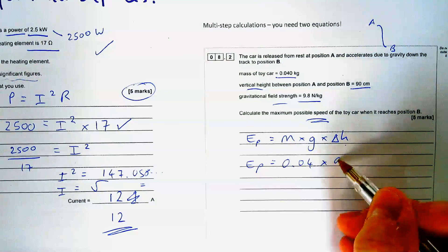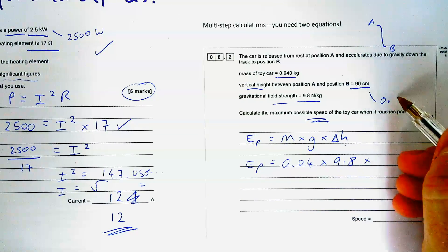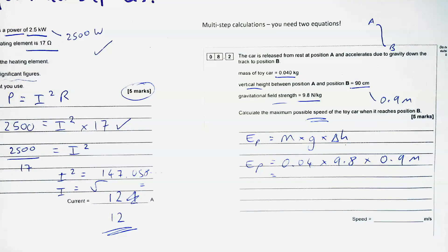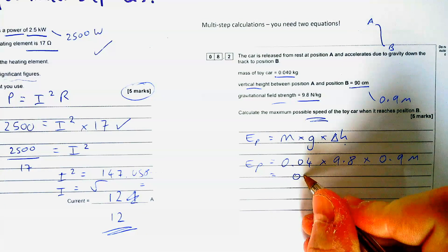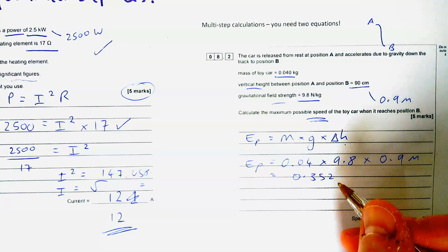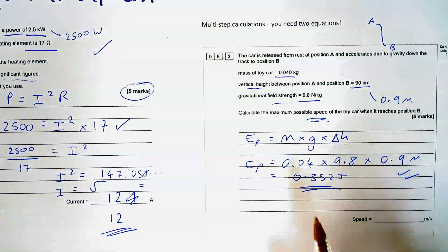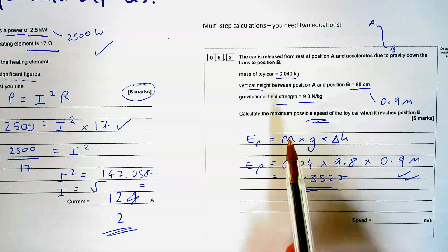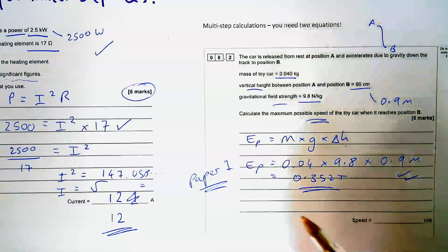So 0.04 times by gravitational field strength 9.8 times by the height in meters — 0.9 meters, get the mark there — happens to be 0.352 joules. That's my three marks already. Next is to figure out speed. I've got speed, mass, and some form of energy. There's only one equation for paper one that has speed in it and that is the one for kinetic energy.